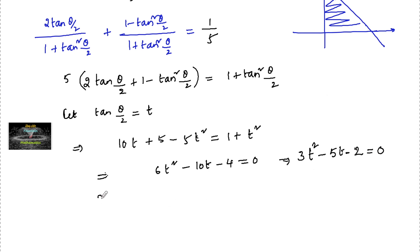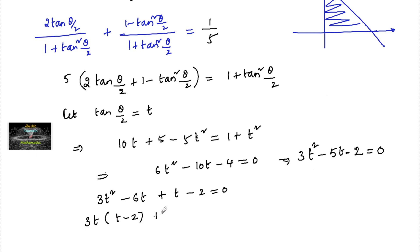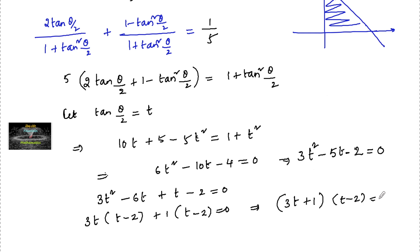Factorizing 3t² − 5t − 2 = 0, we split the middle term as −6t + t, giving 3t(t − 2) + 1(t − 2) = 0, which factors as (3t + 1)(t − 2) = 0.